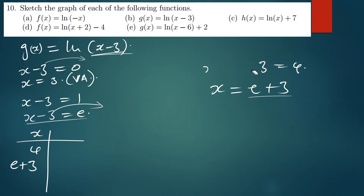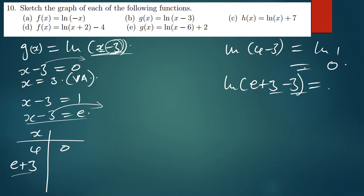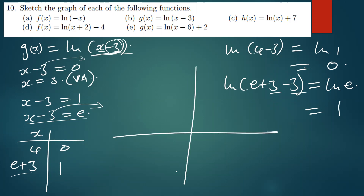Now find the y-values. Plug in x equals 4: g(4) = ln(4 − 3) = ln(1) = 0. Plug in x equals e plus 3: g(e+3) = ln(e+3 − 3) = ln(e) = 1. So we have (4, 0) and (e+3, 1) as our points.